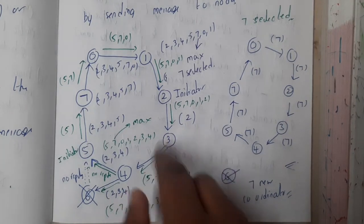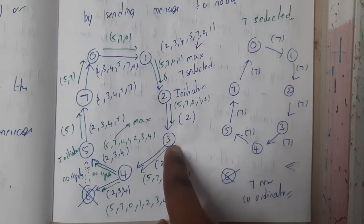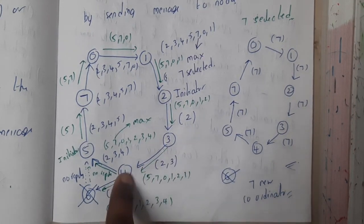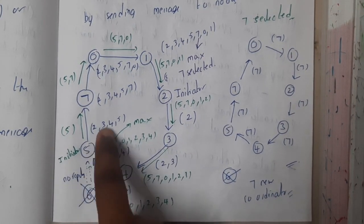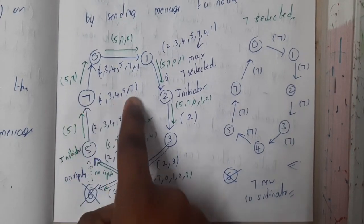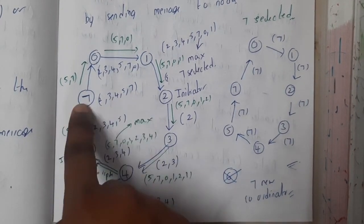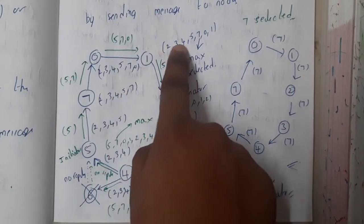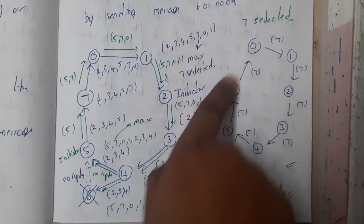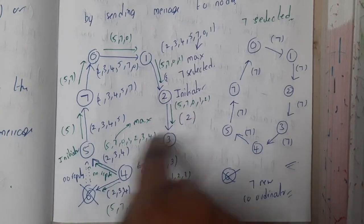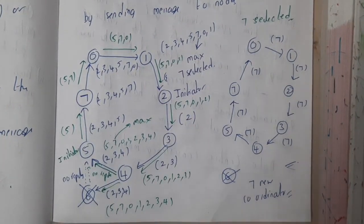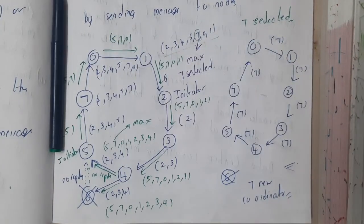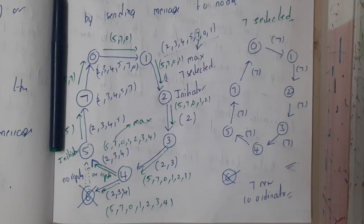Three is not in the list, so three is also pushed. Similarly, it is pushed forward: two, three, four. Again pushed forward: two, three, four, five. Again: two, three, four, five, seven. Again: two, three, four, five, seven, zero. Again: two, three, four, five, seven, zero, one. If you notice, it has reached the starting spot. Now in the list, who is the maximum? Seven is the maximum, so he will be elected as the new leader.